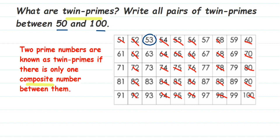Next we have 59 — 59 is a prime number since it has no factors other than 1 and 59. Then 61 is also a prime number. 63 is composite because it goes in the three-times table. 67 is also a prime number. 69 goes in the three-times table, so it is composite — let me cancel that.